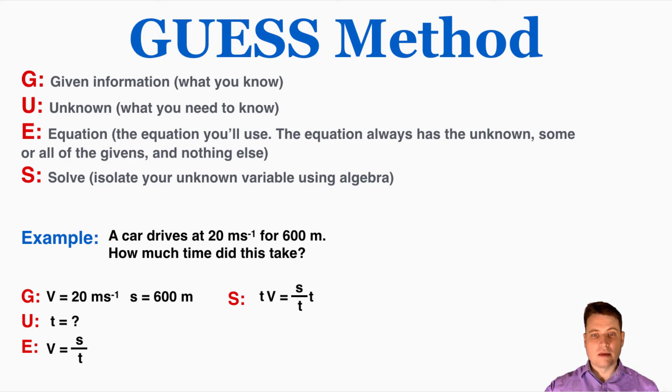When I do that, the t's over here cancel out, and I get t times v is equal to s, but I'm still trying to get t by itself. So the next step is to divide both sides by v, and my final answer is time is equal to displacement divided by velocity.